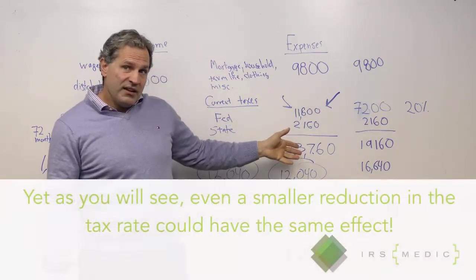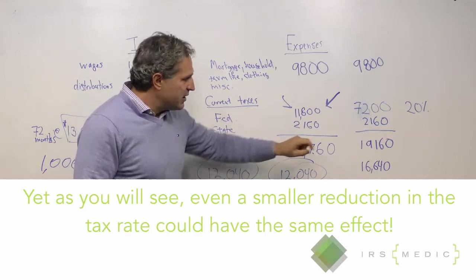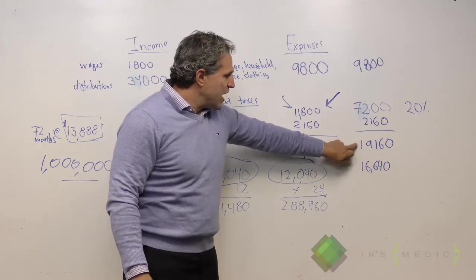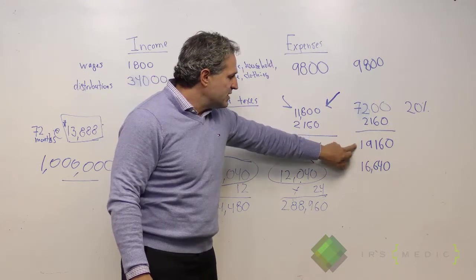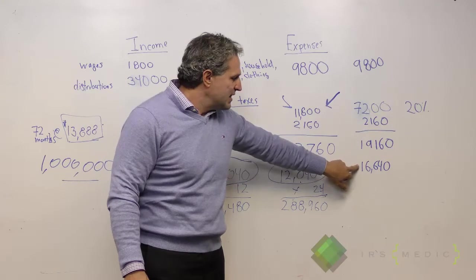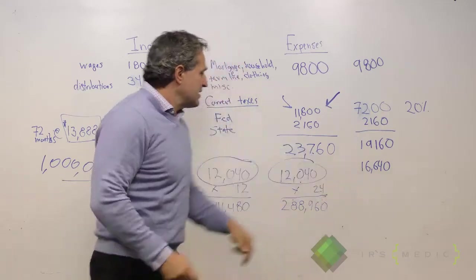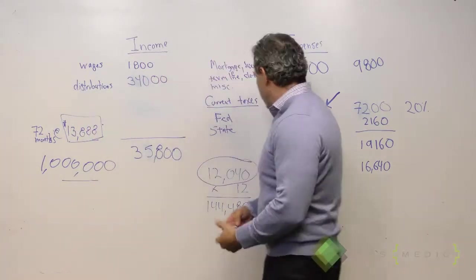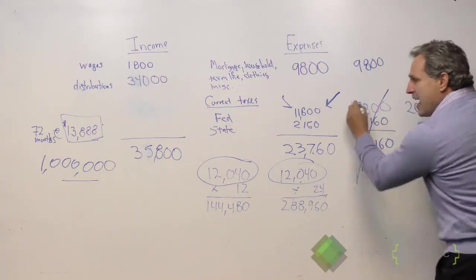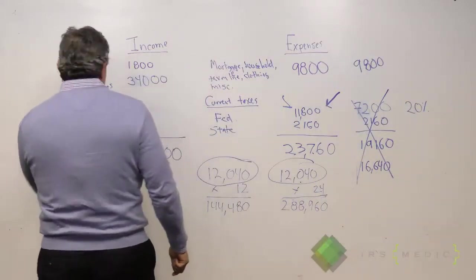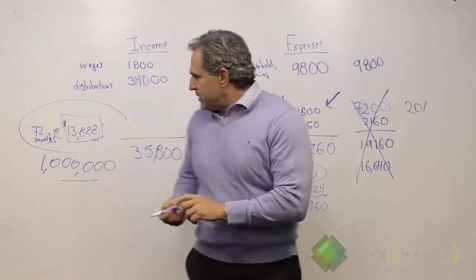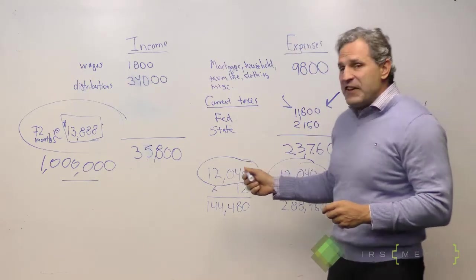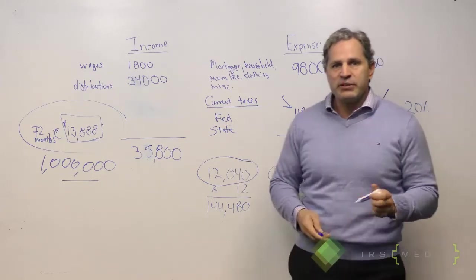That's a good thing, but it's also a horrible thing for settling his back tax, because what happens is now his monthly allowable expenses drop to $19,160, meaning he's got a monthly ability to pay of $16,640. That $16,640 is greater than the $13,888, so the IRS is going to say no thank you, you can repay this entire amount right now. The difference: you're talking about an $850,000 difference a delay could possibly cause.